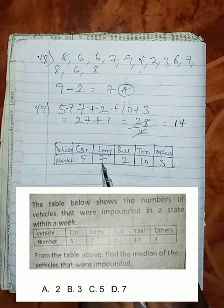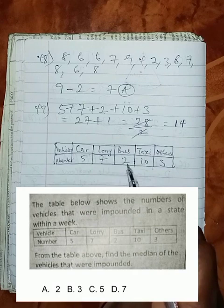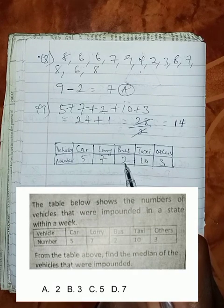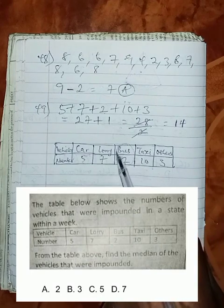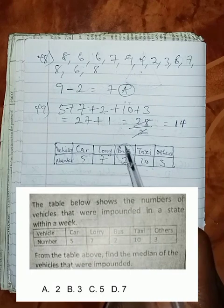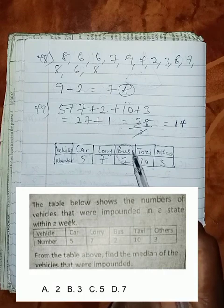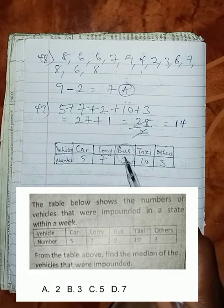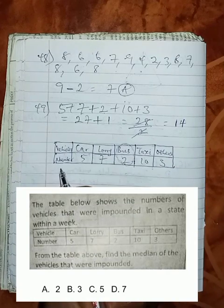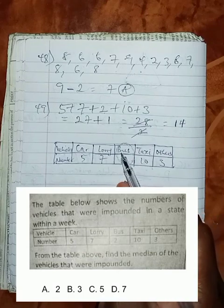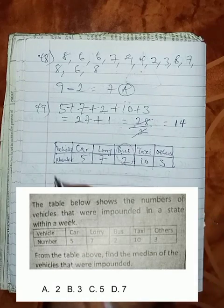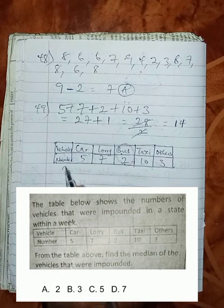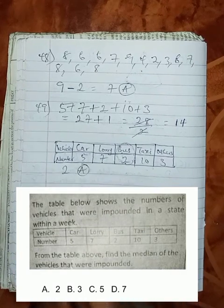Where does 14 fall? 5 plus 7 is 12. Now 12 plus this 2 will give us 14. Which means that this is where 14 falls. So it implies that our median will fall under this bus. All the options here are 2, 3, 5 and 7. The median will be the bus, which is 2. So our answer is 2, which is A, as the median.